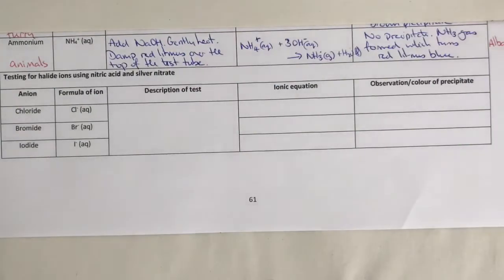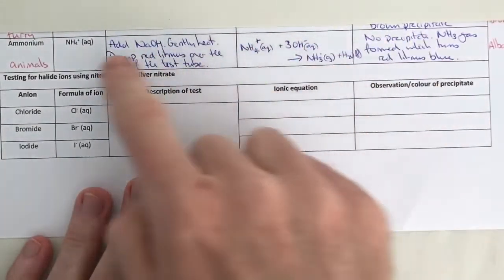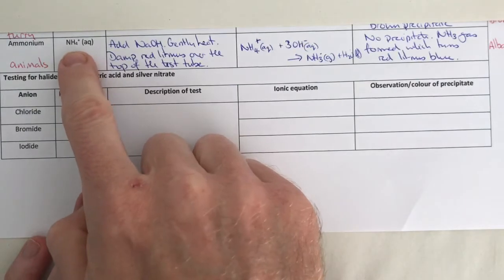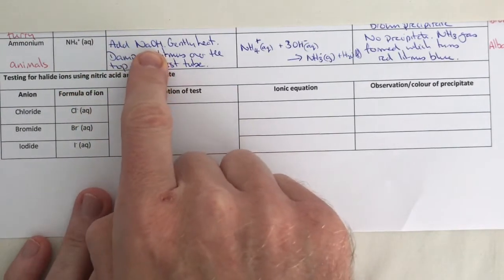In this video I just wanted to explain how we test for ammonia. The presence of ammonia is tested using damp red litmus paper. As an example, if we want to test for the presence of ammonia, we take the ammonium ion and add sodium hydroxide to it.